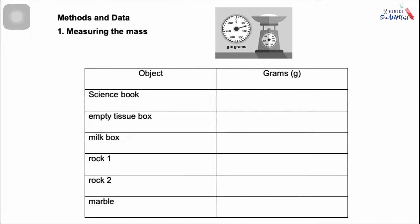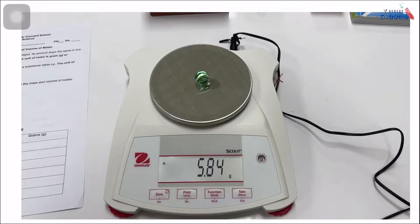So measuring the mass of solid matter. We have these objects: your book, an empty tissue box, milk box, rock samples, and marble. So we are going to get the mass of the following objects. How to do that?